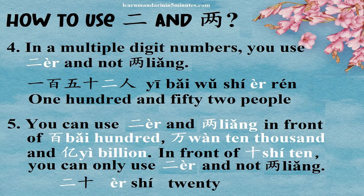In multiple-digit numbers, you use 二 and not 两. For example: 一百五十二人.